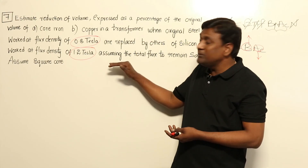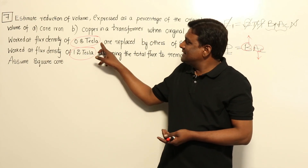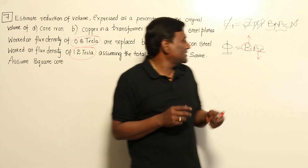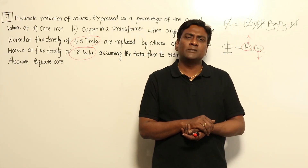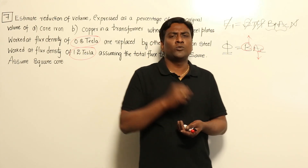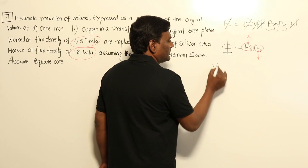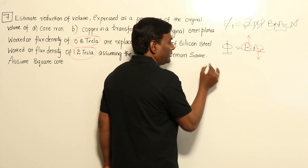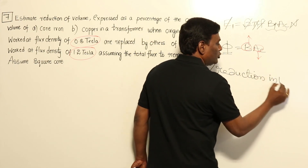About the length of the limb — did they give any information? No. So length of the limb should be considered as constant. Now, if flux density is increased by some x percentage, for a given flux, area of cross section of the core should be reduced by x percentage. If area of cross section of the core is reduced by x percentage, then volume of core will be reduced by x percentage. So directly, percentage reduction in volume of core...